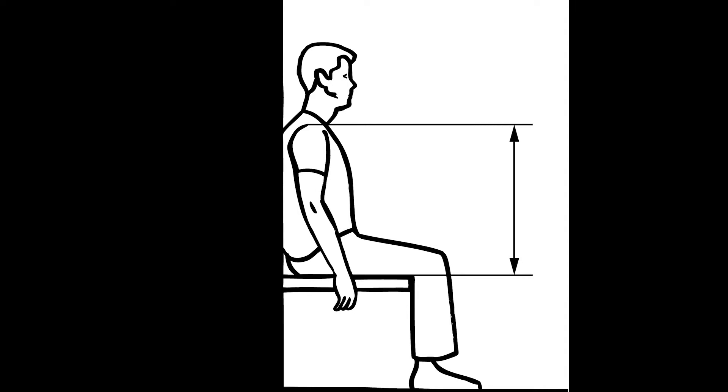The definition of sitting shoulder height is the vertical distance from the seat to the acromion.